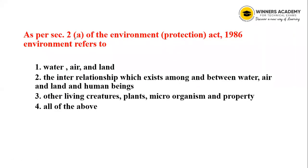Next question: As per Section 2A of the Environment Protection Act 1986, environment includes water, air, and land. The interrelationship which exists among and between water, air, land, and human beings. That is the environment — also including other living creatures, plants, microorganisms, and property.